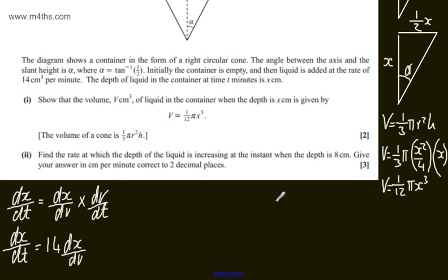We can get an expression for dv dx by differentiating both sides of the equation here with respect to x. I'm then simply going to take the reciprocal and multiply it by 14, and sub in x is equal to 8. So if I now find dv dx, I'm going to differentiate both sides of this equation with respect to x,